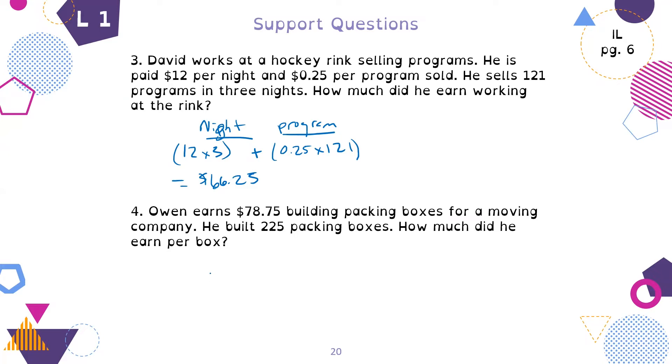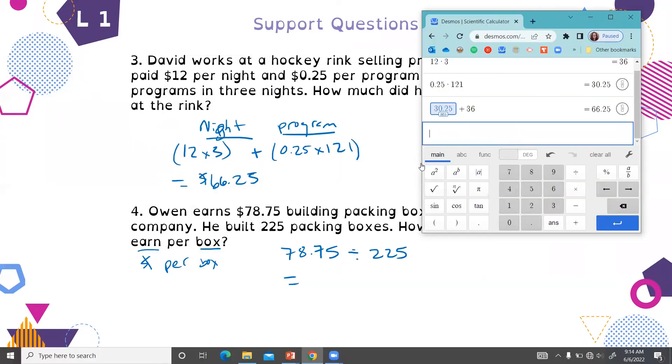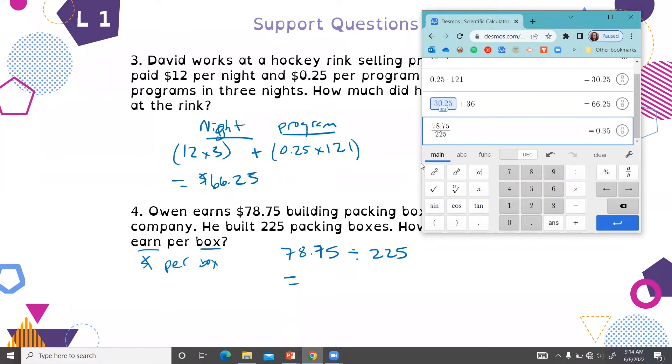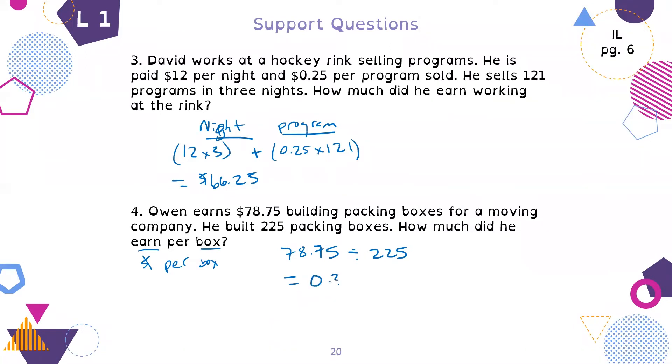Number four, Owen earns $78.75 building packing boxes for a moving company. He built 225 packing boxes. How much did he earn per box? We want money per box, so we're going to do $78.75 divided by 225. That equals 35 cents. So Owen earned 35 cents per box.